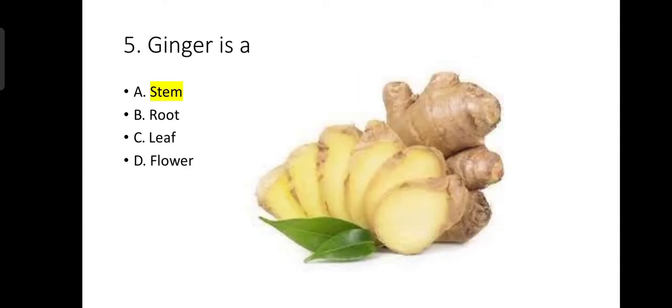Question number 5: Ginger is a stem — specifically an underground modified stem. It has nodes, as we can see in the picture. It is a stem having nodes.